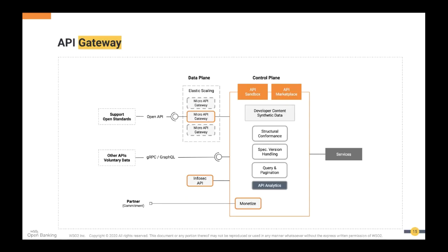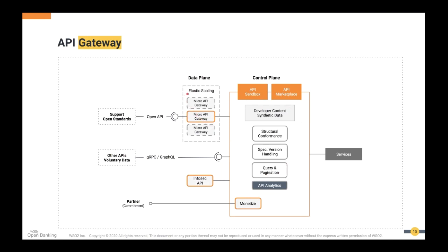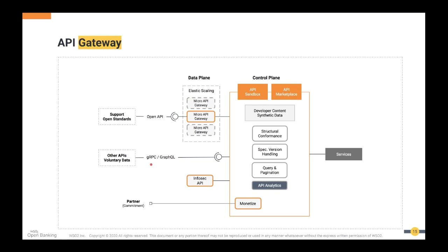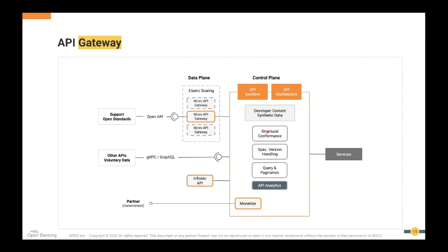For API gateways, we see many patterns: dedicated monolithic heavyweight API gateways, as well as micro API gateways that elastically scale with a control plane supporting many standards. Sometimes banks want to support additional protocols like GraphQL and gRPC, and expose InfoSec APIs through the gateway. Banks also need monetization capabilities. The API gateway must perform structural conformance, specification and version handling, caching, query and pagination, and of course API analytics — all capabilities provided by the WSO2 platform. Mature organizations tend to go for microservices or service mesh-based architectures, while others end up on a heavyweight API gateway model.